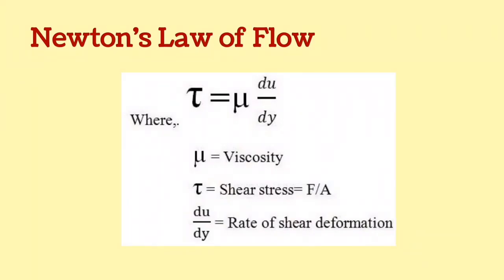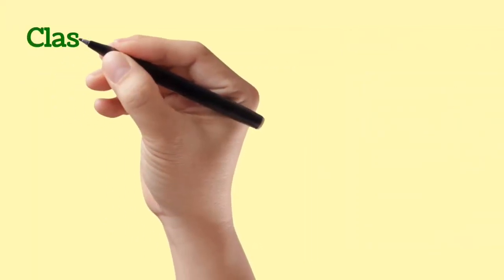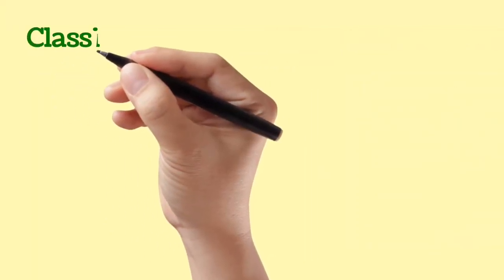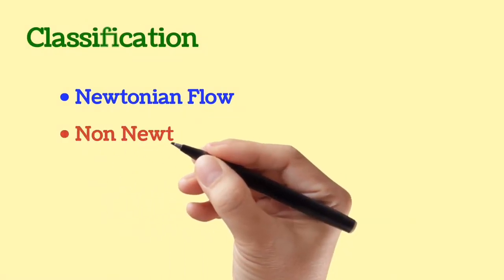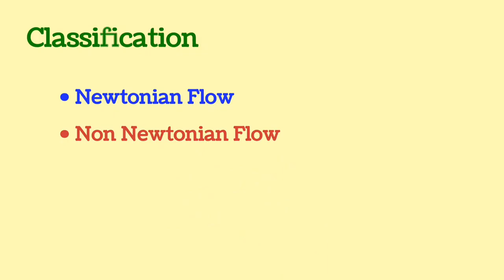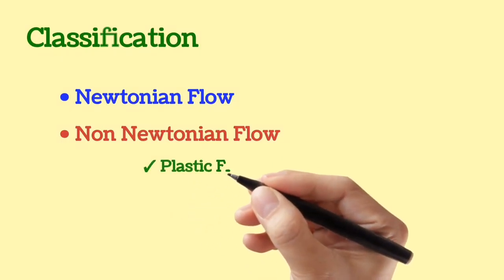Through this Newtonian law, we can classify Rheology into two parts: Newtonian flow, the type of flow which follows Newton's law of flow, and non-Newtonian flow, which does not follow Newton's law. We can further classify non-Newtonian flow into three parts: Plastic flow, Pseudoplastic flow, and Dilatant flow.